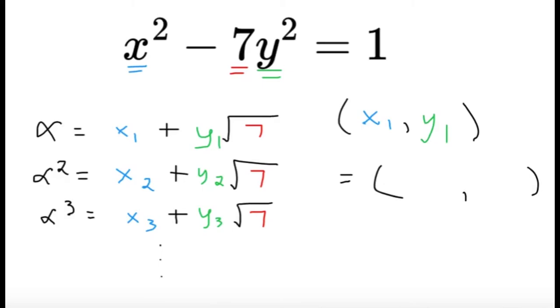Suppose we have the minimal solution x sub 1 comma y sub 1. The minimal solution meaning the smallest possible values of x and y. And then we can write it as a number alpha equals x sub 1 plus y sub 1 square root of 7. And this result is very much seen in algebraic number theory.